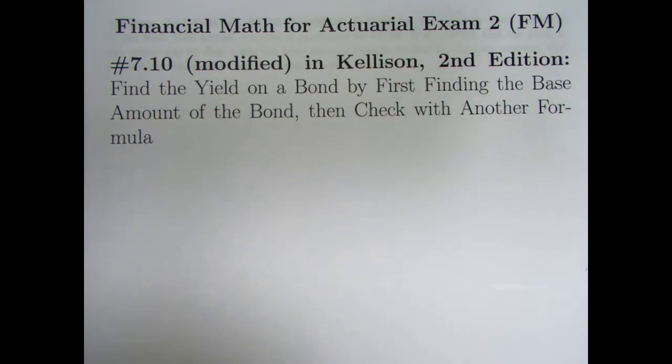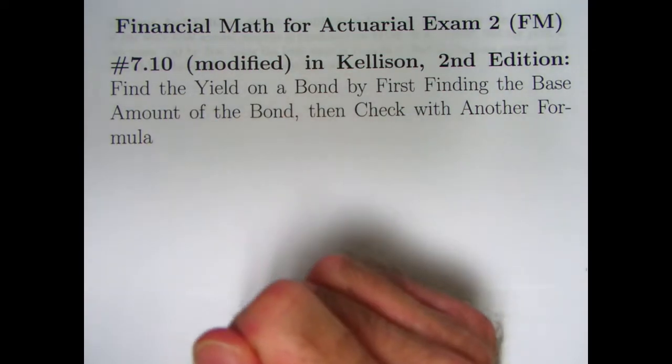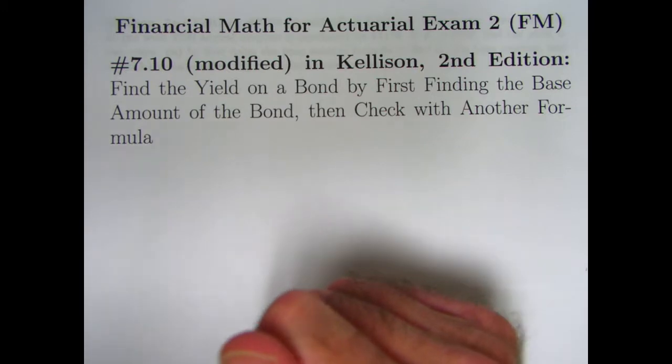We're continuing with our problem-solving for bond problems using various formulas. We're going to do a modified version of problem 7.10 from the second edition of Kellison in this video.